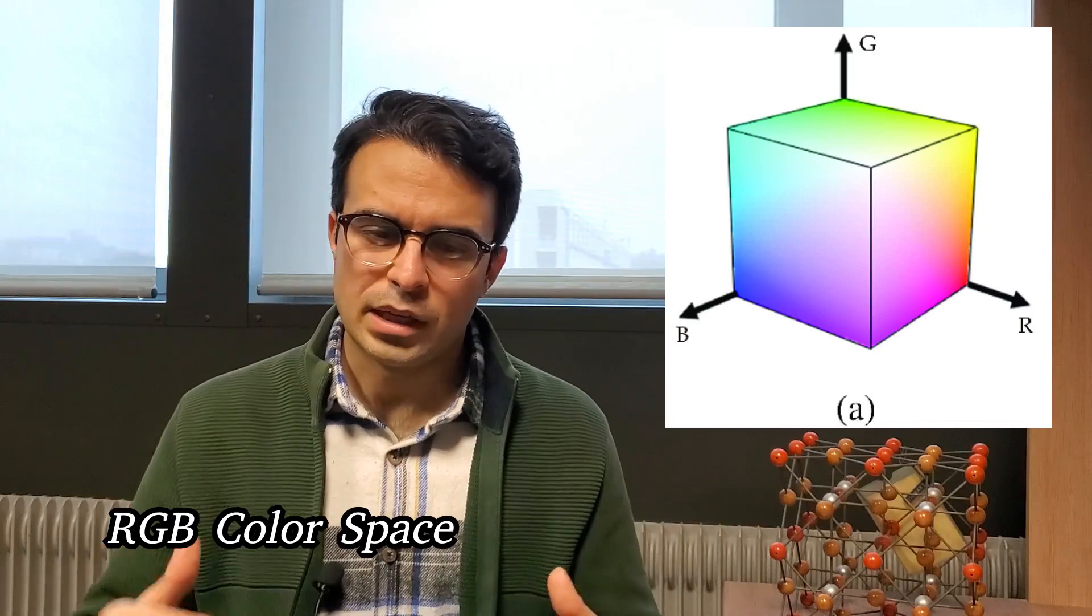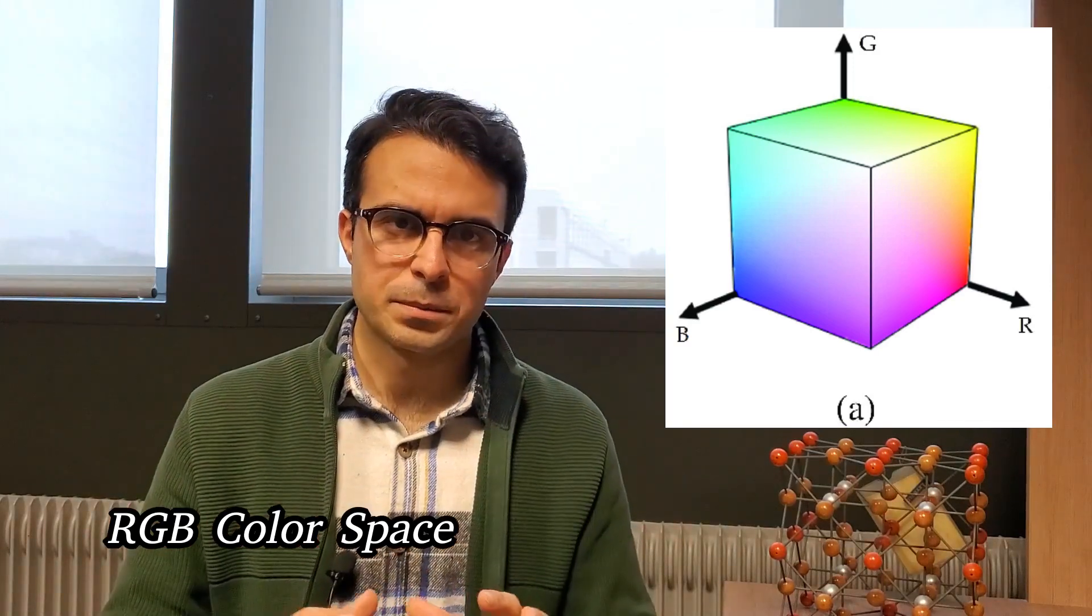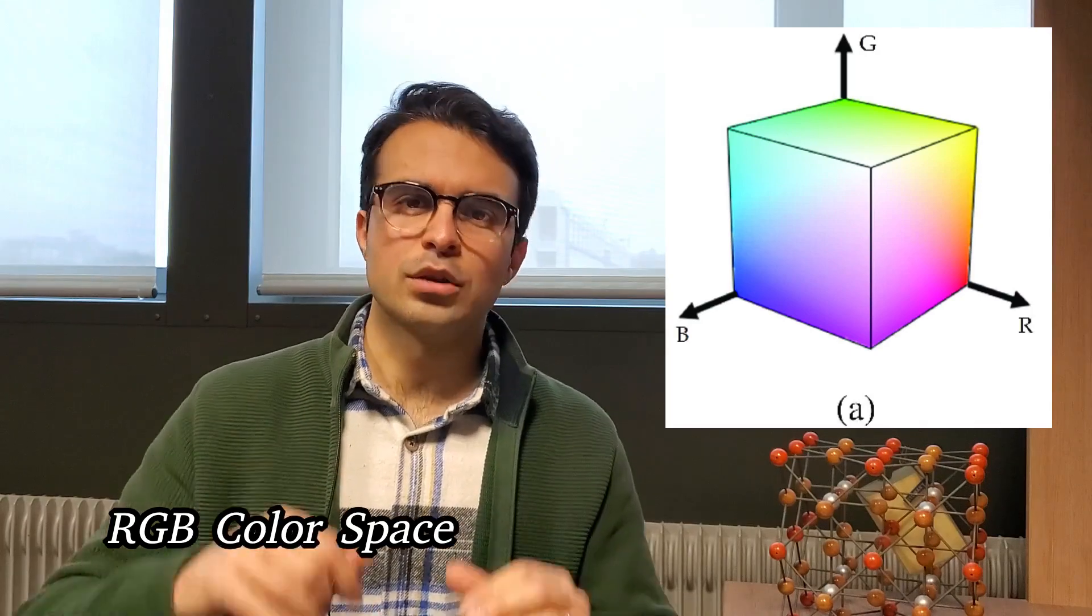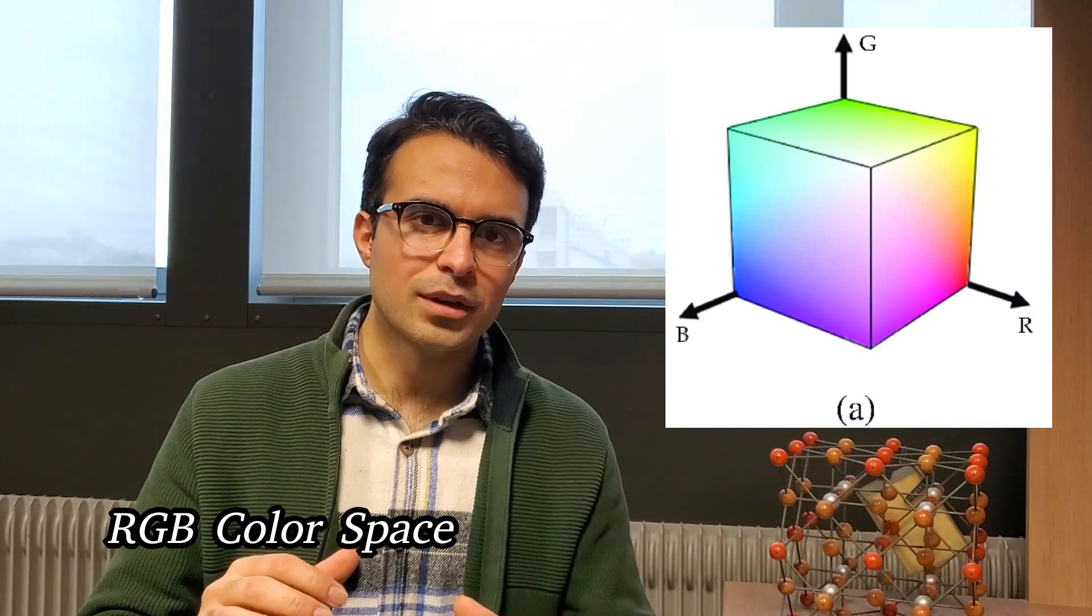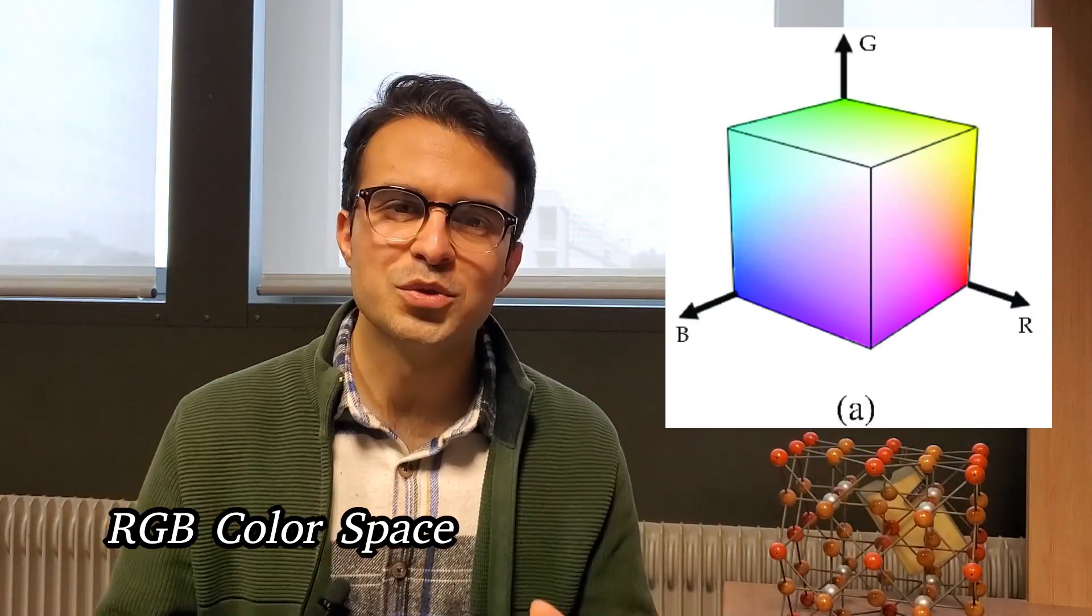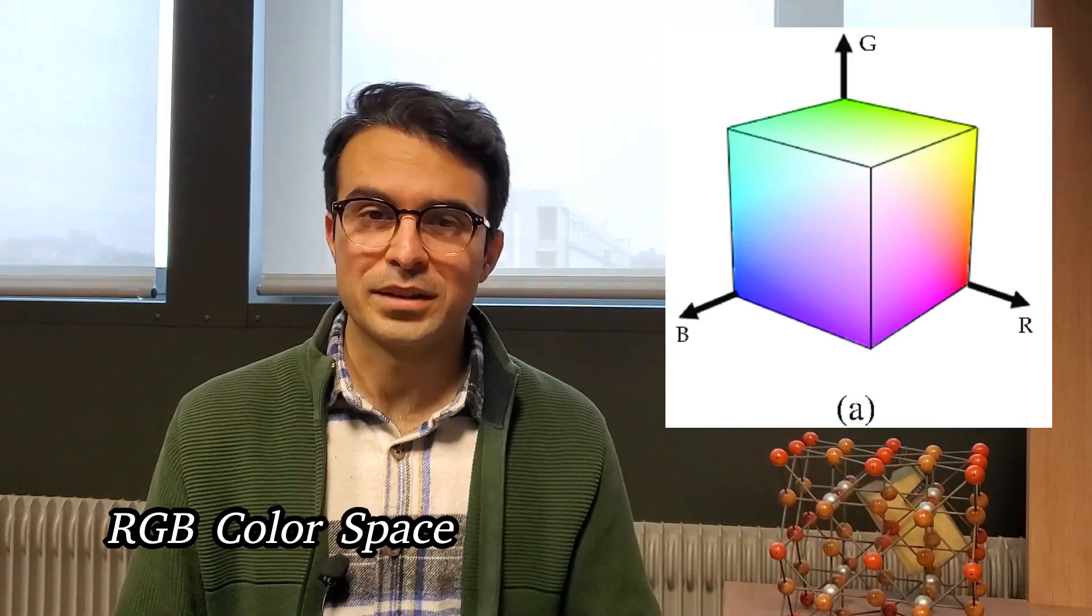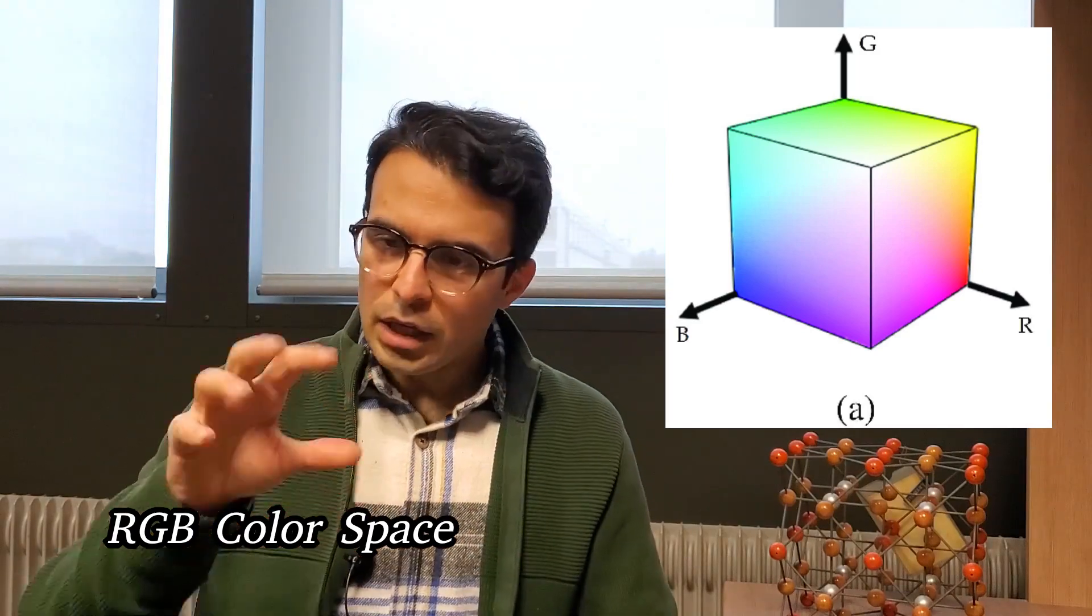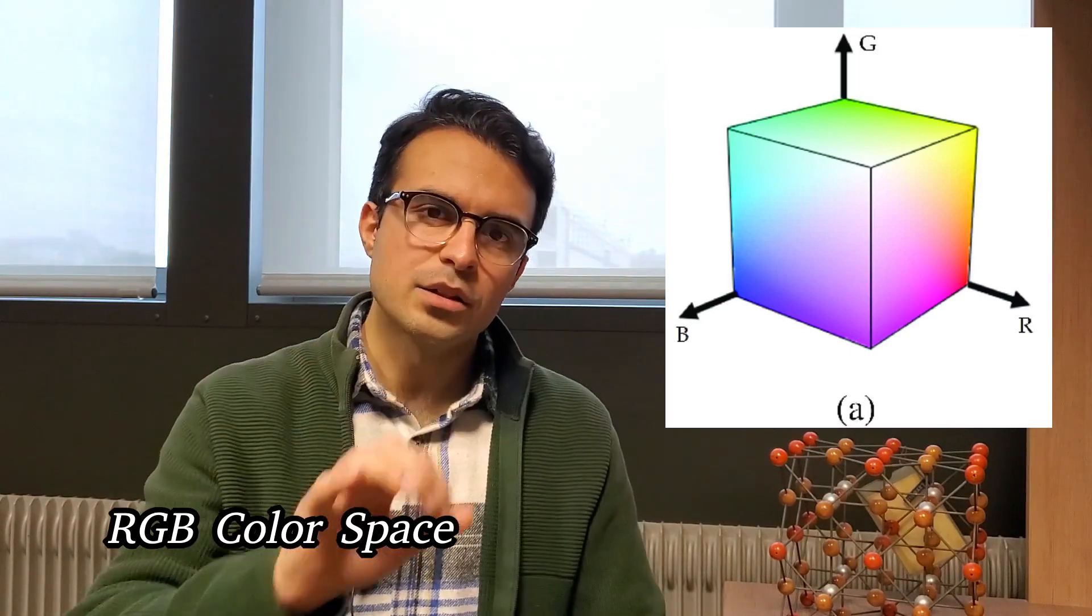If we have all the colors in the highest degree and purity, for example 255 red, 255 green, 255 blue, you will know that we will have white. All other colors are created in this cube and inside this cube.